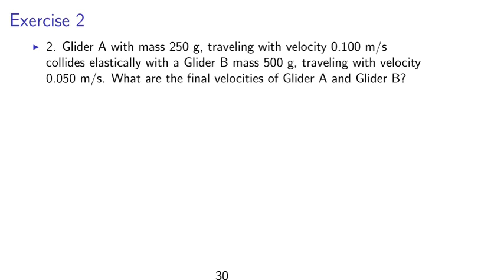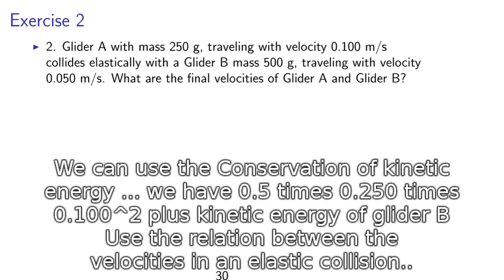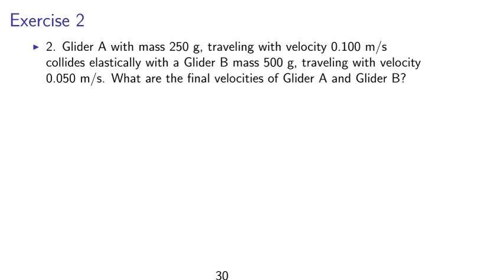Exercise 2. Consider two gliders, Glider A and Glider B, on a frictionless air track. Glider A with mass of 250 g traveling with velocity 0.100 m per second collides elastically with Glider B of mass of 500 g traveling with velocity 0.050 m per second. What are the final velocities of Glider A and Glider B?